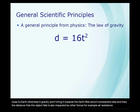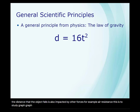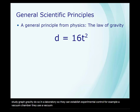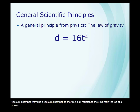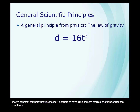Experimental physicists who study gravity do so in a laboratory so they can establish experimental control. For example, they use a vacuum chamber so there's no air resistance, and they maintain the lab at a known constant temperature. This makes it possible to have simpler, more sterile conditions, which make it easier to manipulate independent variables and see their effects on dependent variables.